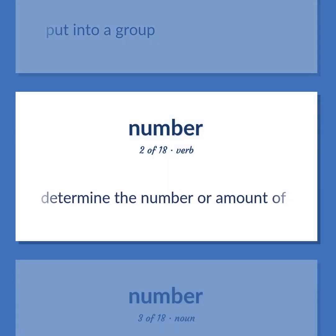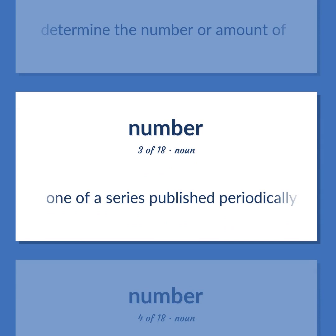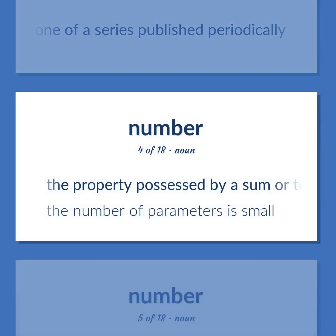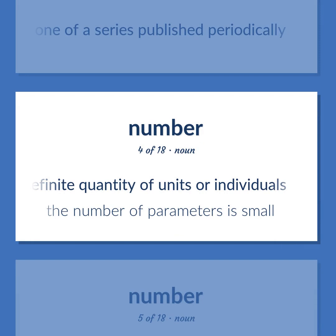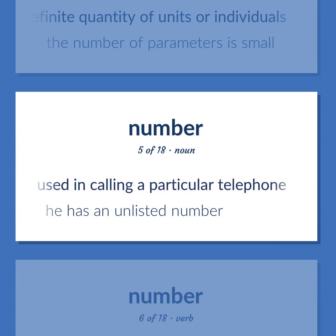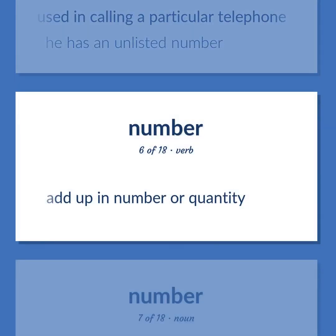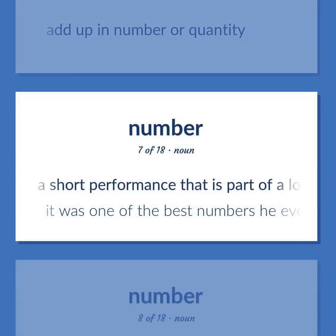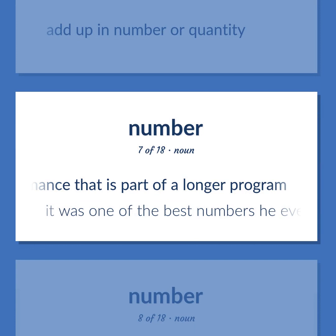Number: determine the number or amount of. One of a series published periodically. The property possessed by a sum or total or indefinite quantity of units or individuals — the number of parameters is small. The number used in calling a particular telephone — he has an unlisted number. Add up in number or quantity. A short performance that is part of a longer program — it was one of the best numbers he ever did.